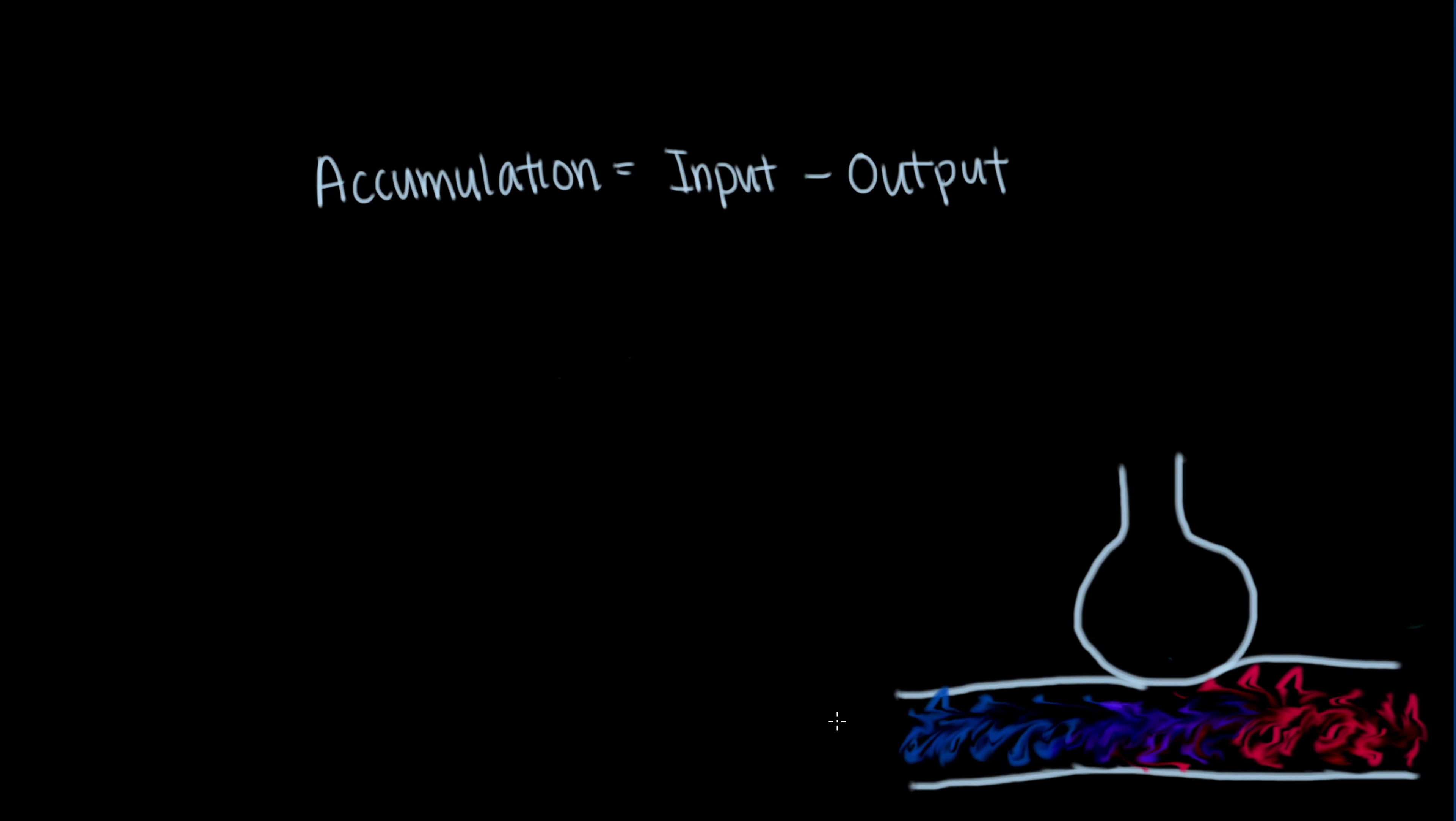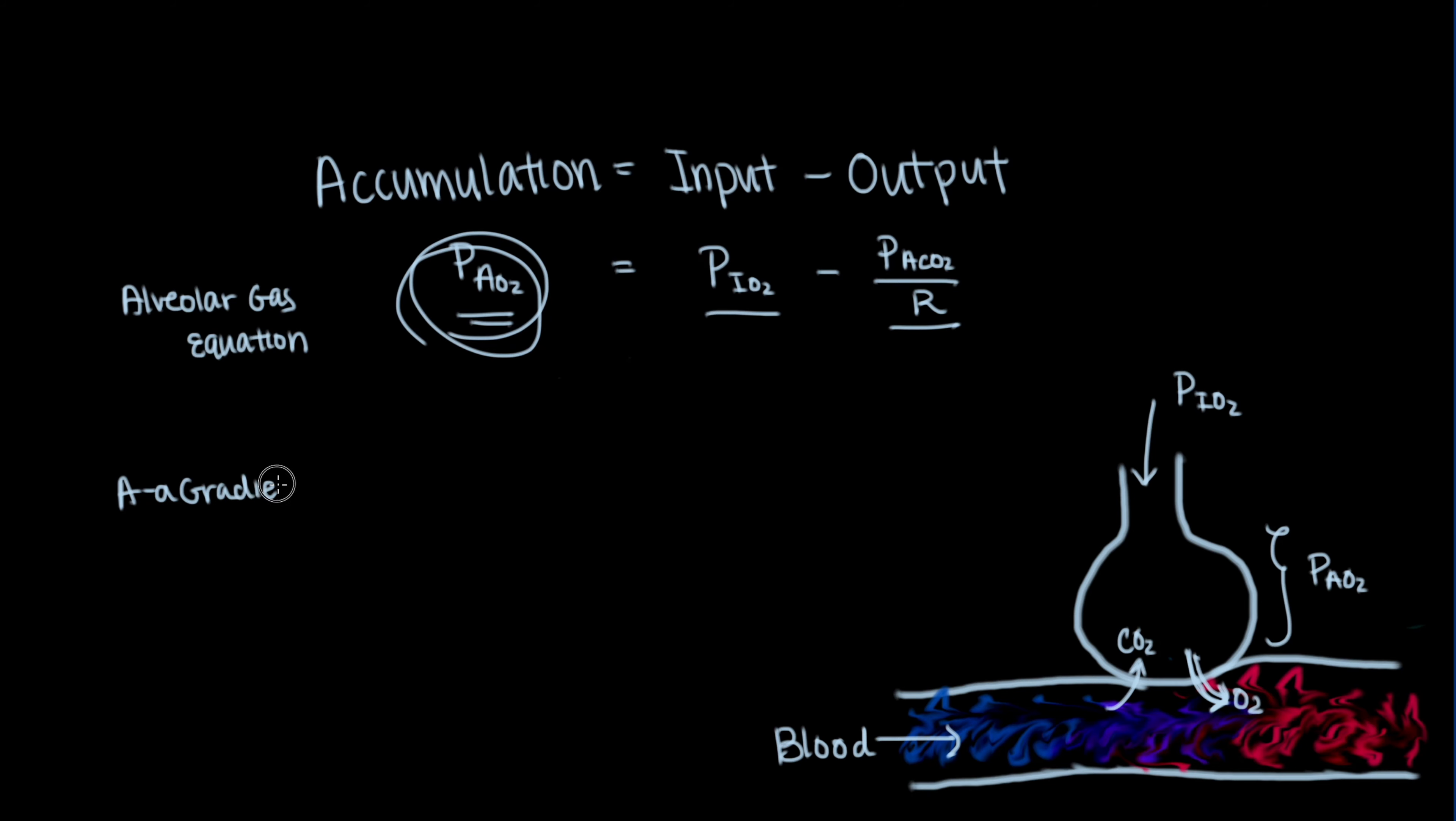Here we have an alveolus and a blood vessel capillary with blood that is ready to drop off some carbon dioxide and load some oxygen in its place. The term here represents the input of oxygen into the alveolus. The term here represents the output of oxygen out of the alveolus and into the blood. And the last term here represents the oxygen that has accumulated in the alveolus. This amount of oxygen accumulated in the alveolus is what we want to solve for for the AA gradient calculation.